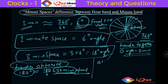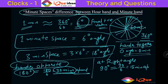When the hands are at right angle, what does that mean? When they are at right angle the angle is 90 degrees. So 90 divided by 6 is 15 minutes apart. When I say the hands are at right angle, the angle between them is 90 degrees and they are 15 minutes apart in terms of minute space difference.